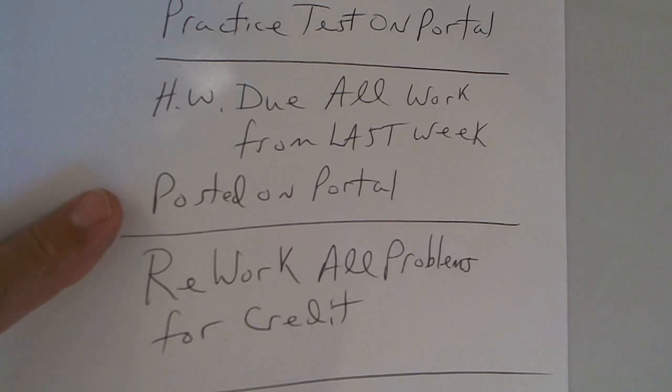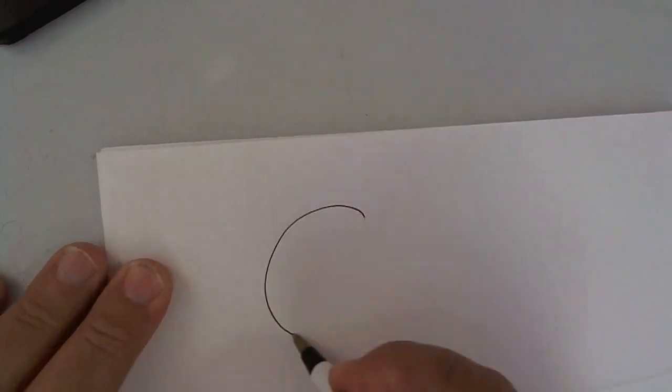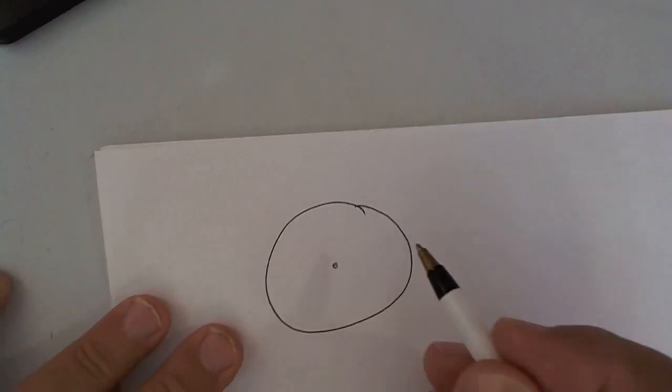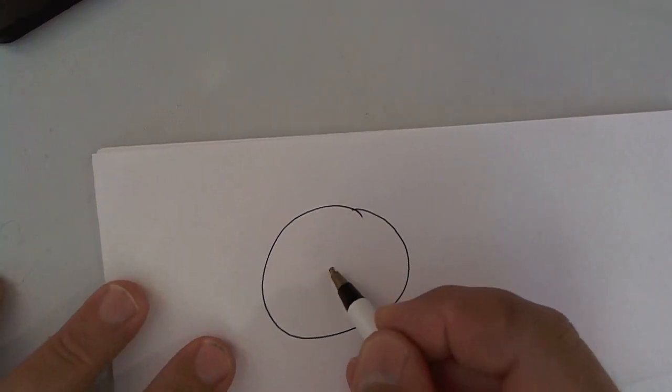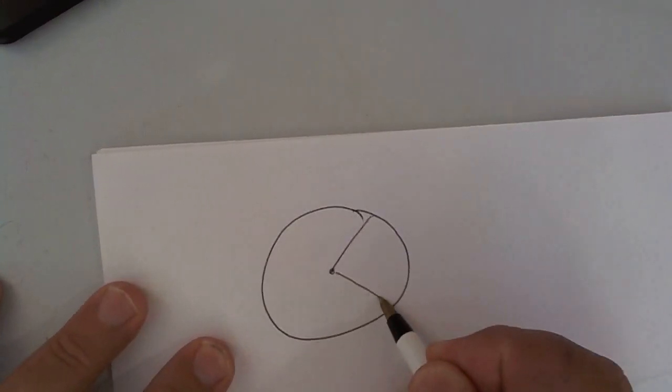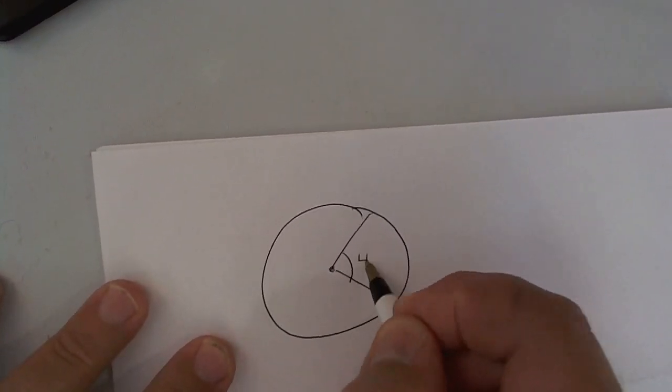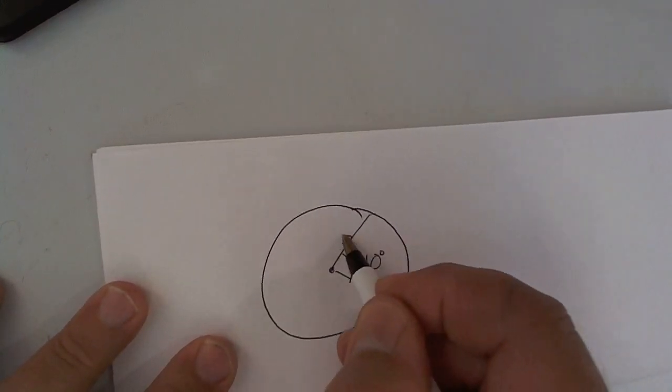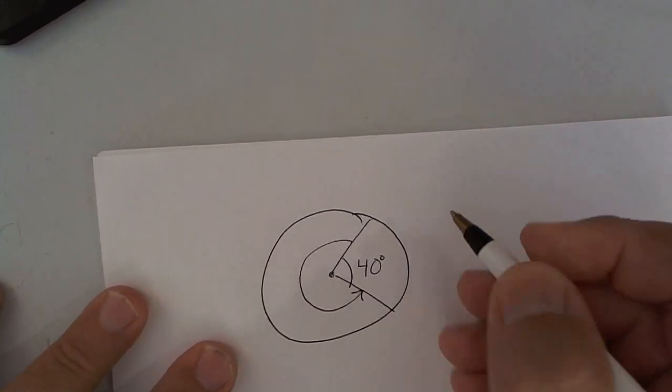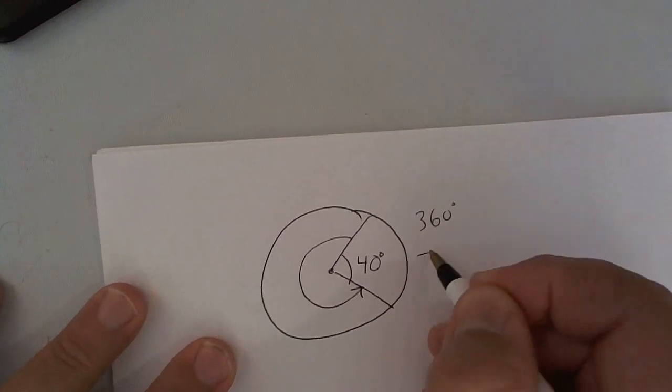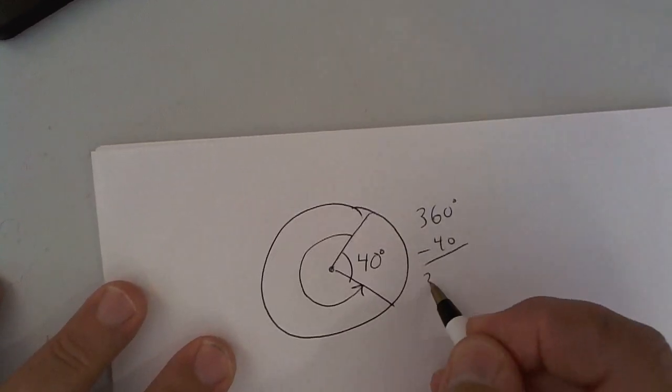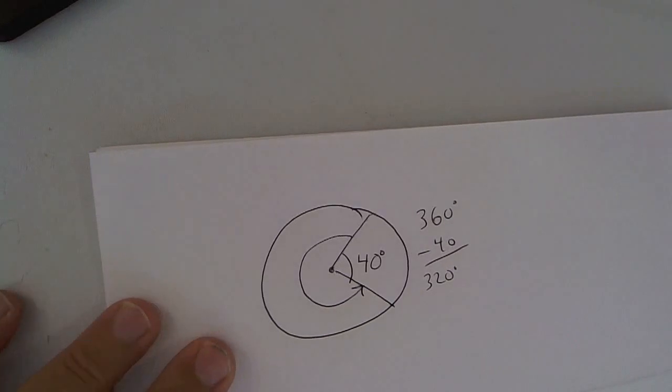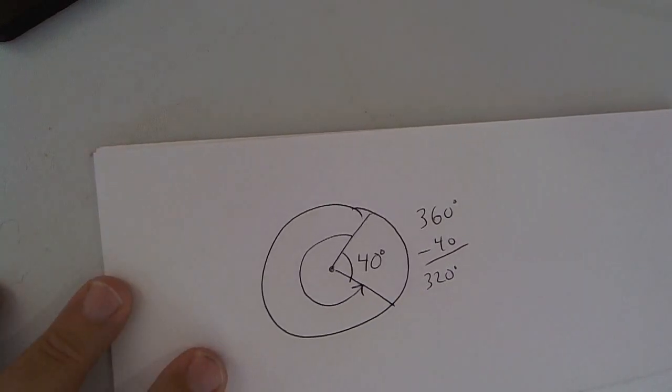Remember, you're trying to learn and that's our goal. Alright, 10.7 they're talking about circles. If you take an angle and let's say this angle right here is 40 degrees, that means this angle has to be 360 minus 40. So that angle has to be 320 degrees because it's got to add up to 360.